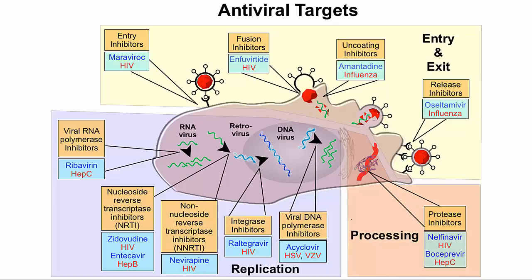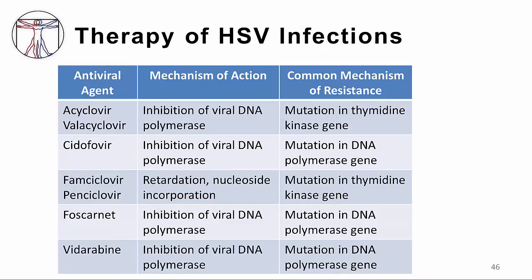With regards to antiviral therapy, this is our antiviral target map, and I'll draw your attention to the part related to herpes infections. The antivirals used to treat HSV infections mostly work by inhibiting viral DNA polymerase. Acyclovir, or derivatives of acyclovir, are the drugs used for treating HSV and VZV infections, and acyclovir is the one most commonly used.